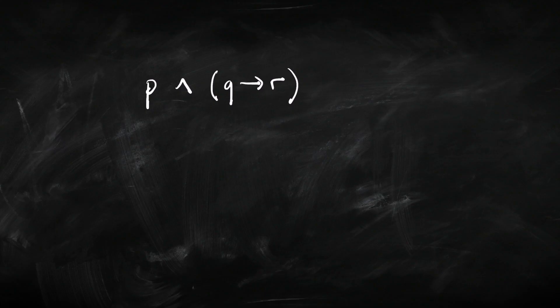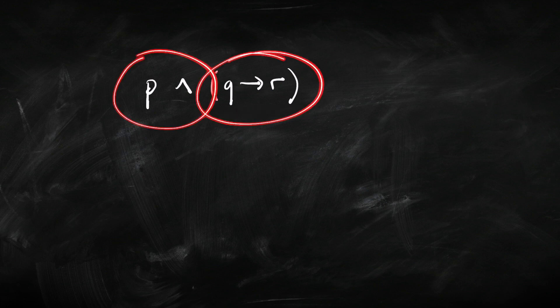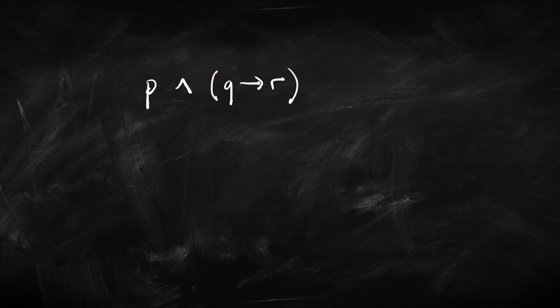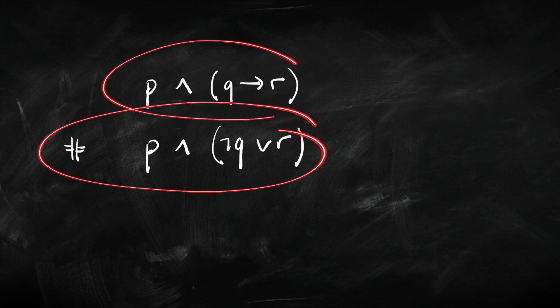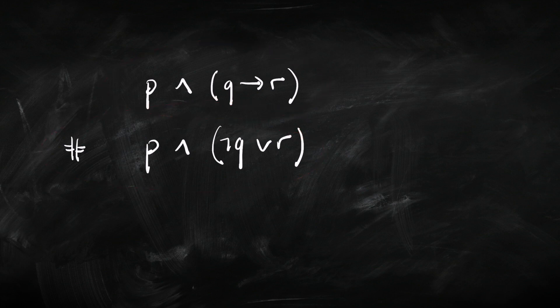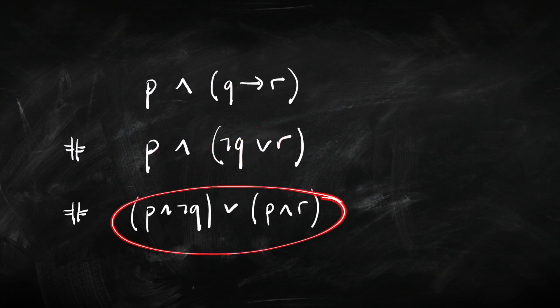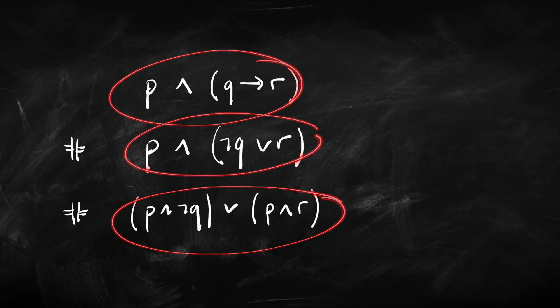Let me give you a really simple example of how we can use some of these equivalent schemes to transform a sentence. We can apply those schemes to just one sub-sentence, transforming that part while the rest stays the same. We are going to rewrite the arrow portion using negation and disjunction, which gives us the equivalent form. Then we can use the distribution rule to distribute AND over OR. So this sentence is equivalent to this one, which is equivalent to this one — they're all equivalent.